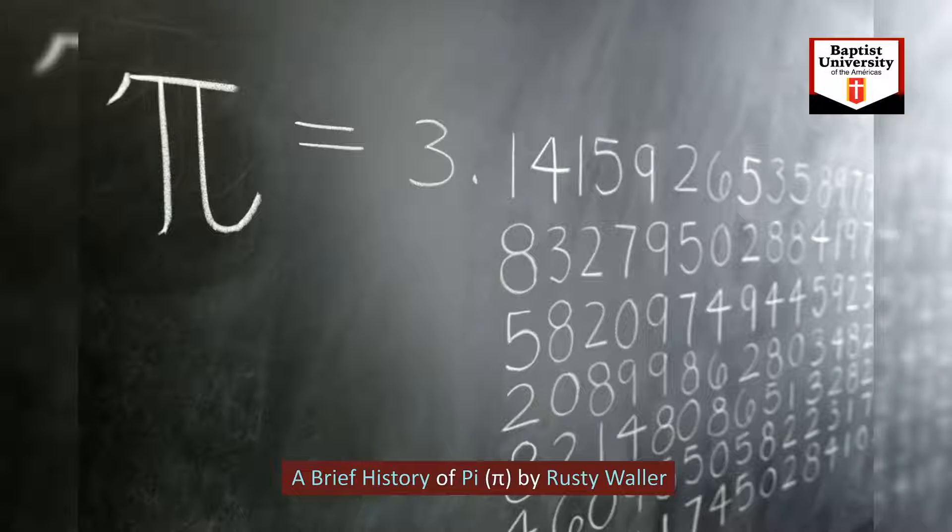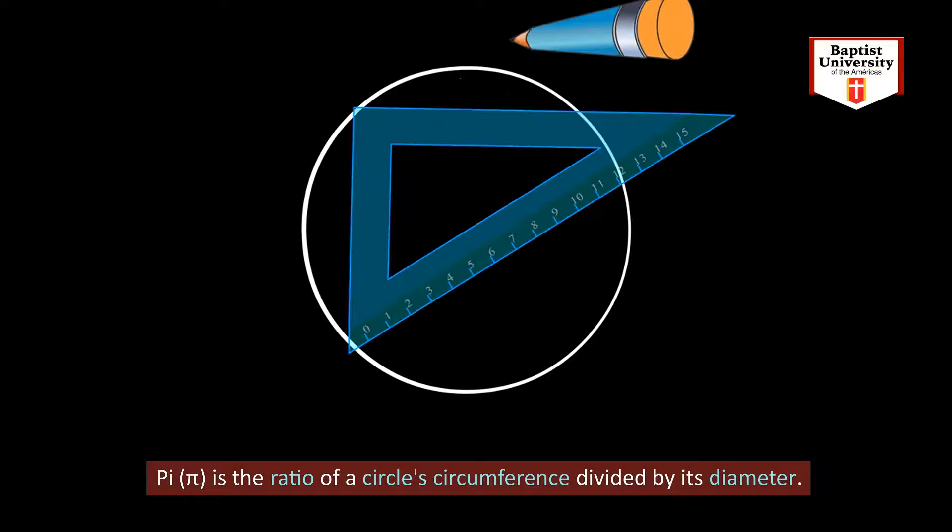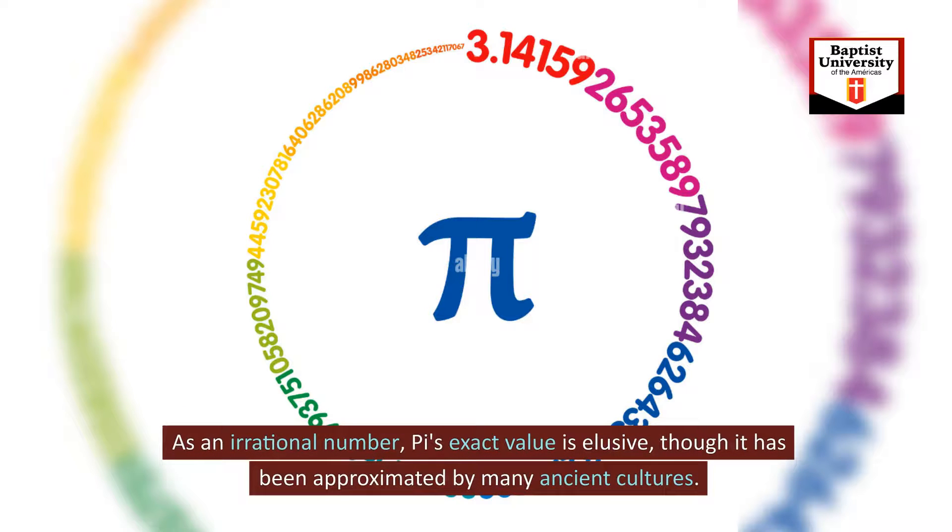A Brief History of Pi by Rusty Waller. Pi is the ratio of a circle's circumference divided by its diameter. As an irrational number, pi's exact value is elusive, though it has been approximated by many ancient cultures.